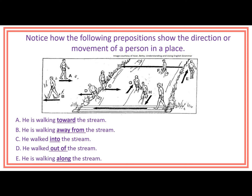Person E — he is walking along the stream. Person F — he is walking through the stream.